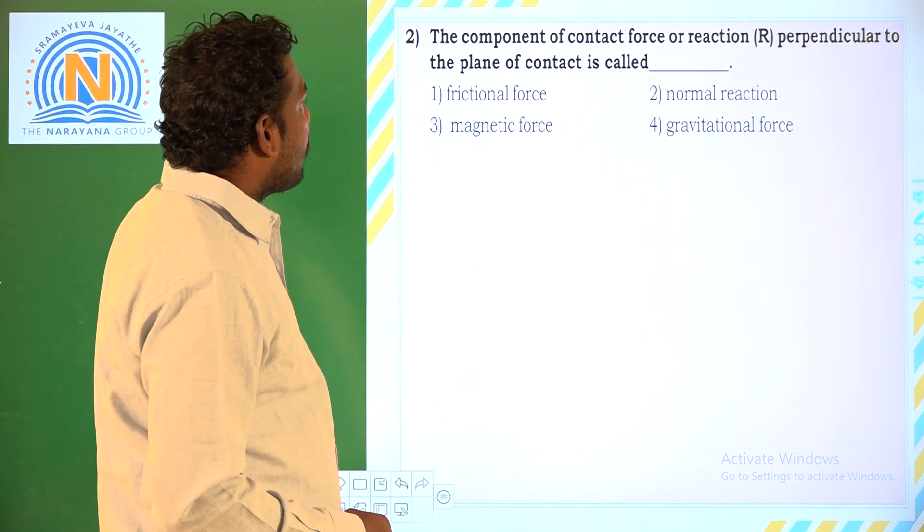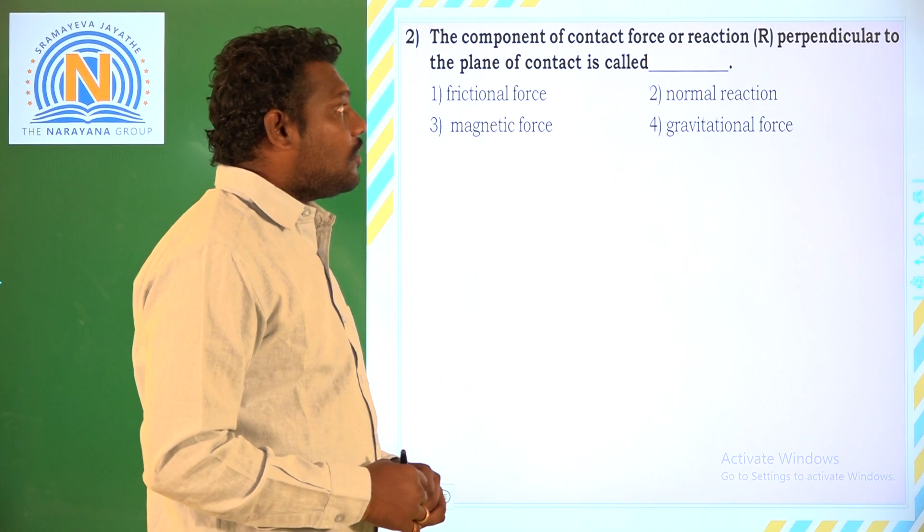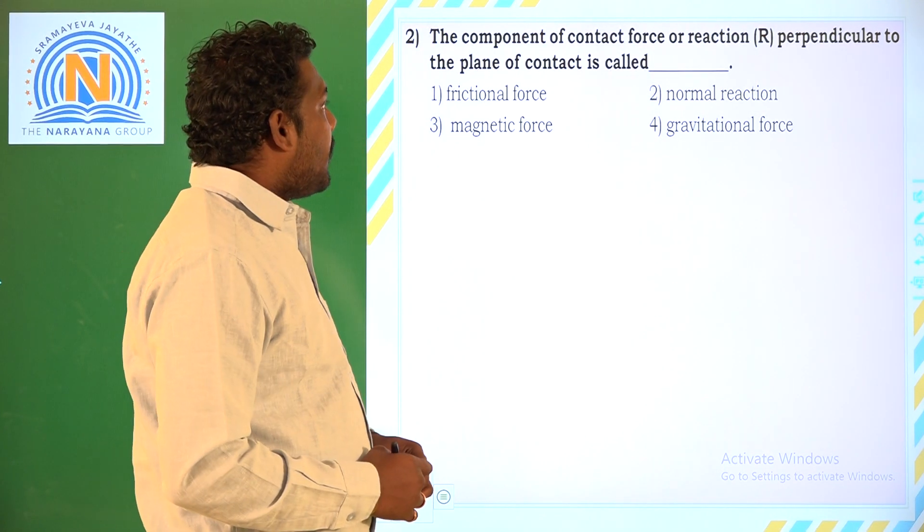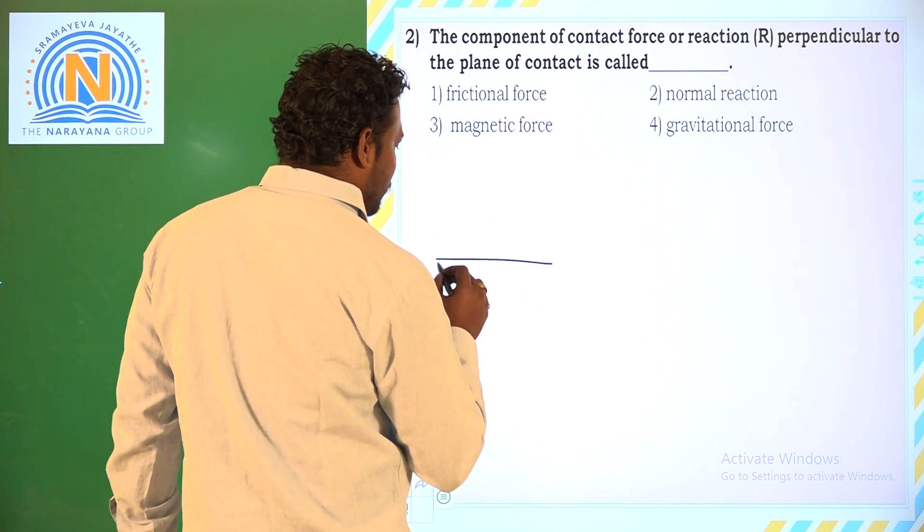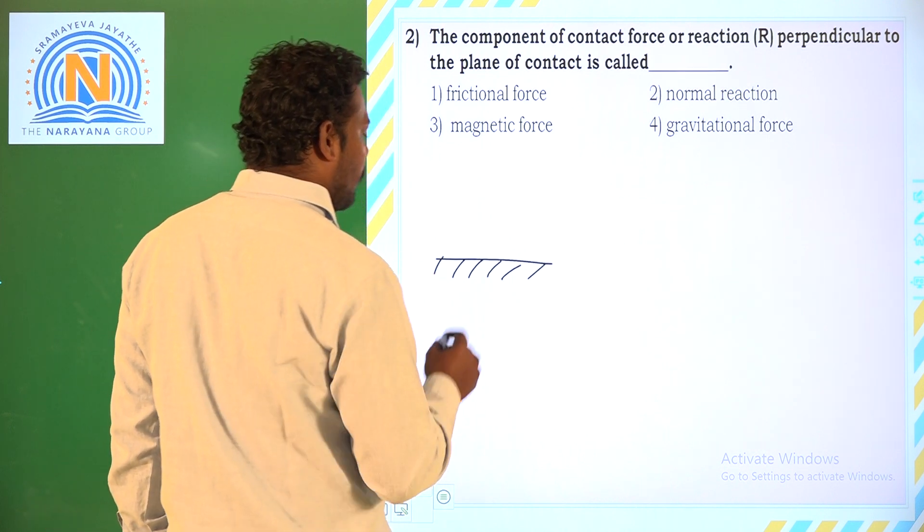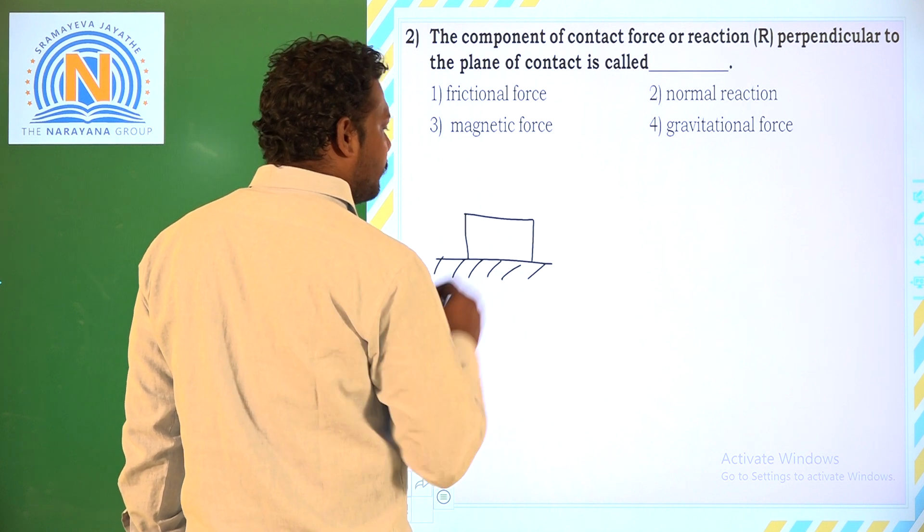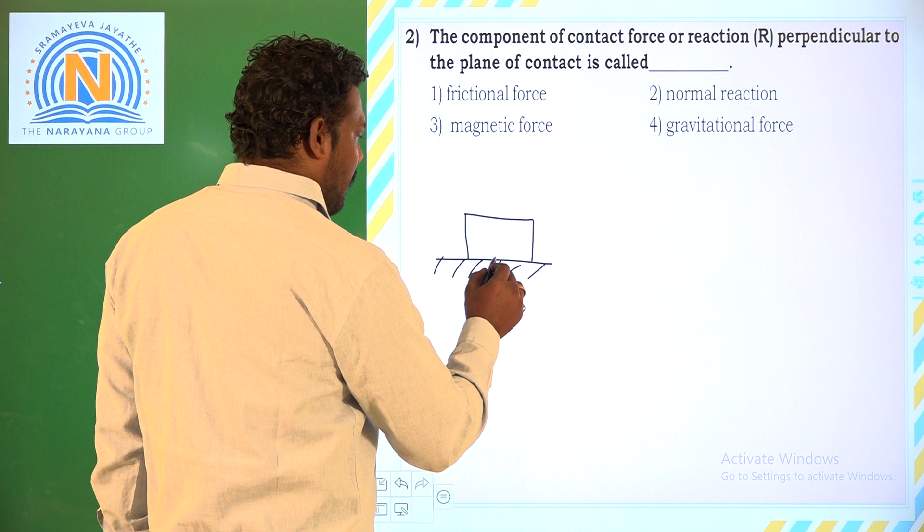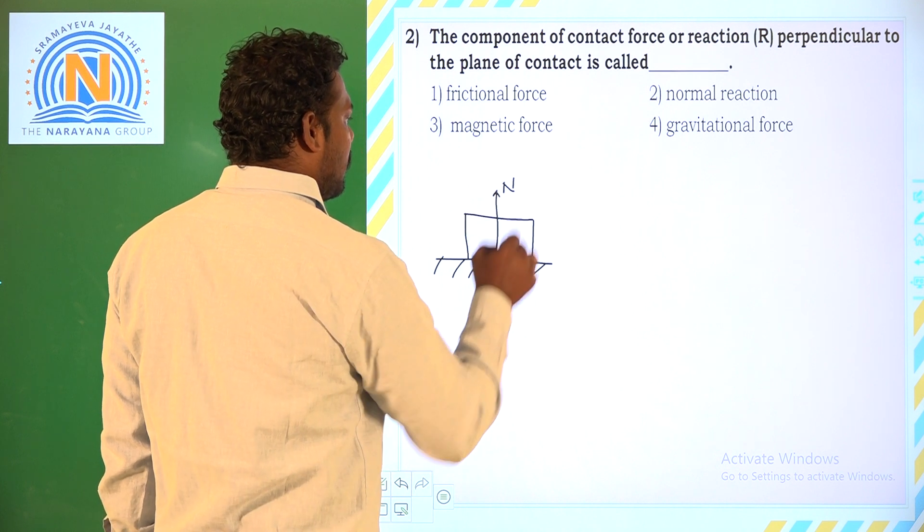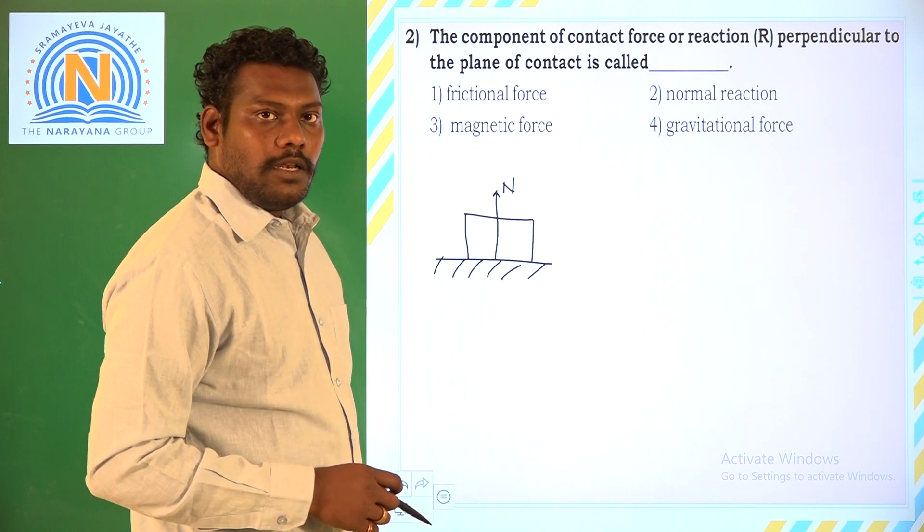Let us see the second question. The component of contact force or reaction perpendicular to the plane of contact. Let us say, if this is the ground and there is a body on it. Now, this is the surface. Perpendicular to the surface you will get a normal reaction.